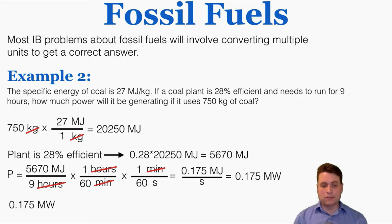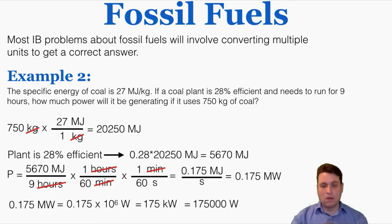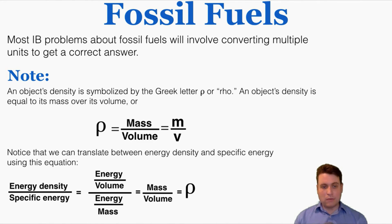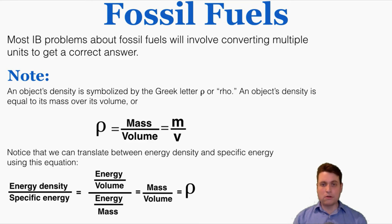There are different ways of writing these answers: 0.175 megawatts equals 175 kilowatts, or 175,000 watts, or 1.75 × 10⁵ watts — all acceptable. Also note that an object's actual physical density is symbolized by the Greek letter rho (ρ = mass/volume). We can translate between energy density and specific energy using this: dividing energy density by specific energy cancels out to mass over volume, which equals rho. So if you know the physical density and one of the two energy measures, you can find the other. That's what you need to know about fossil fuel stations.